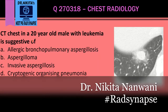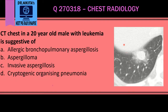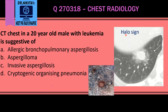Here we have a 20-year-old male with leukemia and a CT chest showing the classical halo sign. The halo sign is seen in invasive aspergillosis, where the fungus invades the vessels and thereby causes infarct in the lung. The central part represents the pulmonary infarct and the surrounding halo represents pulmonary hemorrhage. In angio-invasive aspergillosis, the central nodule or consolidation represents the infarct, and the surrounding ground glass opacity represents the pulmonary hemorrhage.